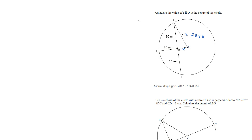According to Theorem 1, this is perpendicular — this is a chord. So if this is perpendicular, then this angle is also 90 degrees by Theorem 1. That means I have the hypotenuse, so (20 + x)² is equal to x² plus 30².